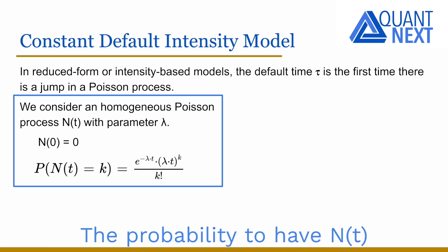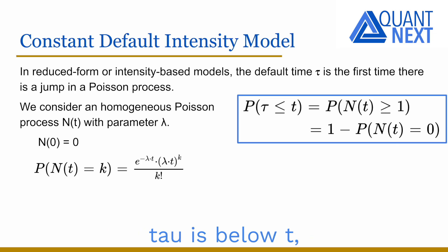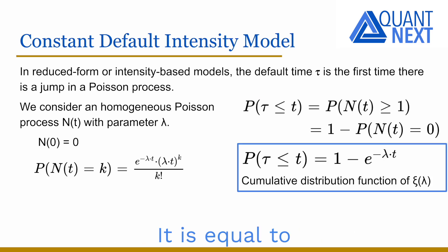The probability to have N(t) equals to k has the following expression. So the probability that tau is below t, the probability of default at time t, is equal to 1 minus the probability to have N(t) equals to 0. It is equal to 1 minus the exponential of minus lambda t. We recognize the cumulative distribution function of an exponential distribution. So tau follows an exponential distribution with parameter lambda.